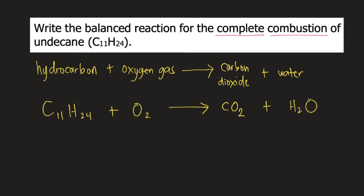To balance this reaction, we need to consider three elements: carbon, hydrogen, and oxygen. The number of each element must be equal on both the left and right sides of the equation. Here is a tip: balance carbon first, then hydrogen, and lastly balance oxygen.